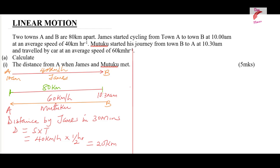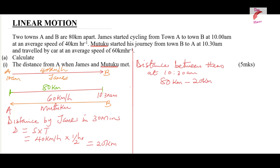That is the distance James traveled in 30 minutes before Mutuko began the journey. The distance between them at 10:30 a.m. is therefore the whole distance from A to B — 80 kilometers — minus the distance covered by James, which gives 60 kilometers separating them at 10:30 a.m.